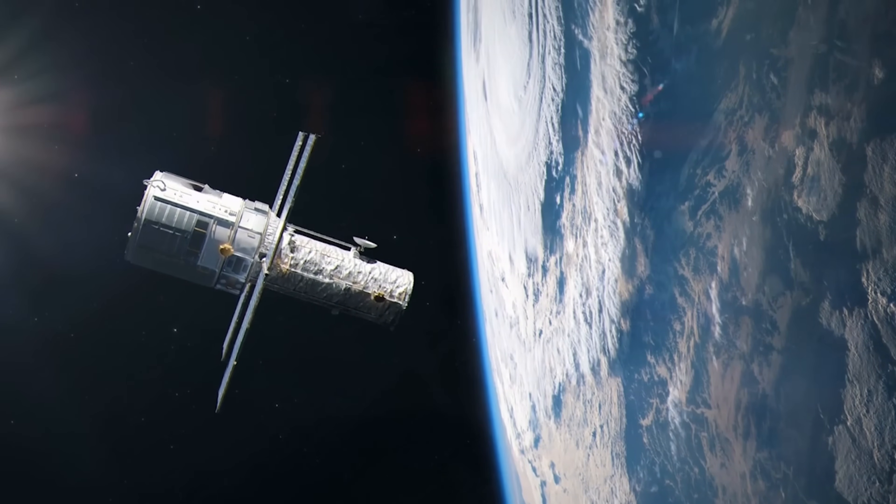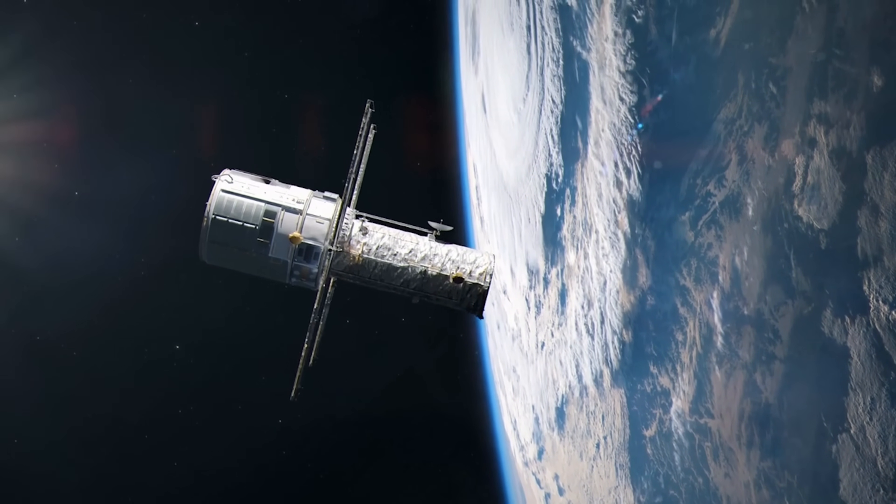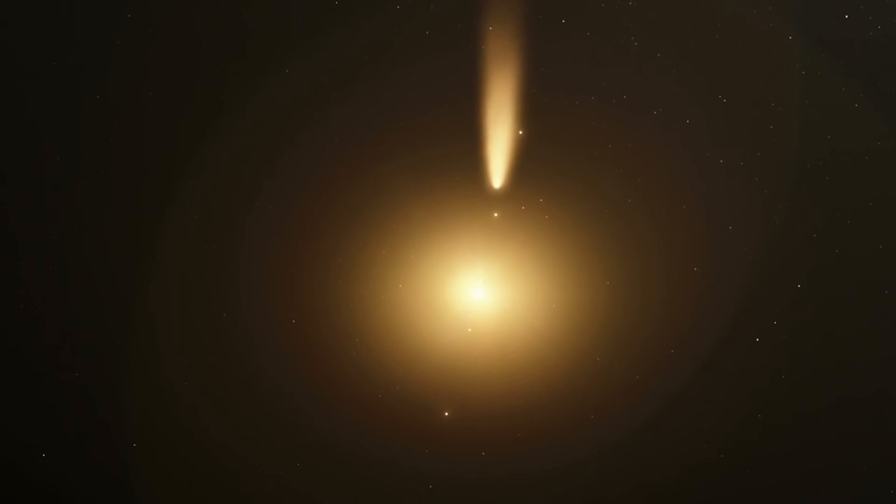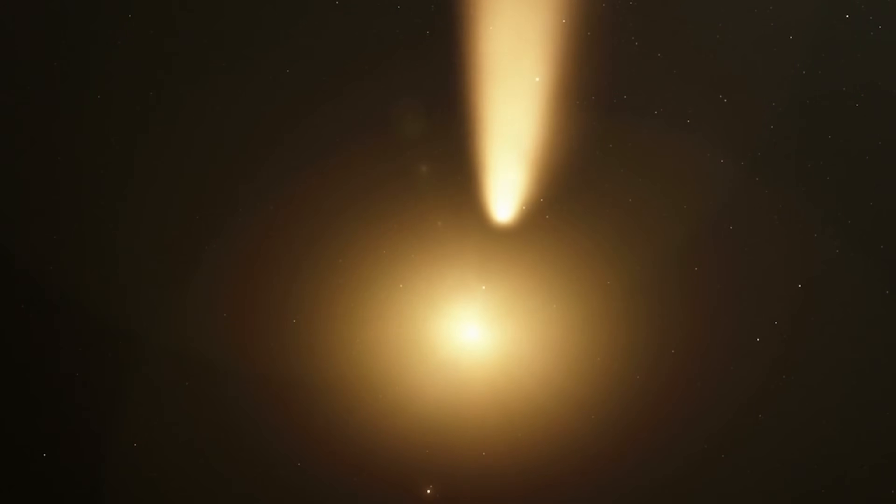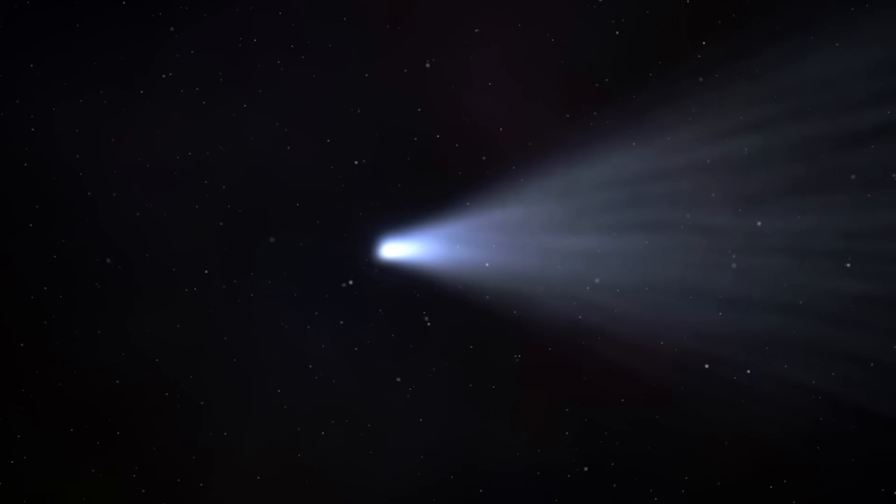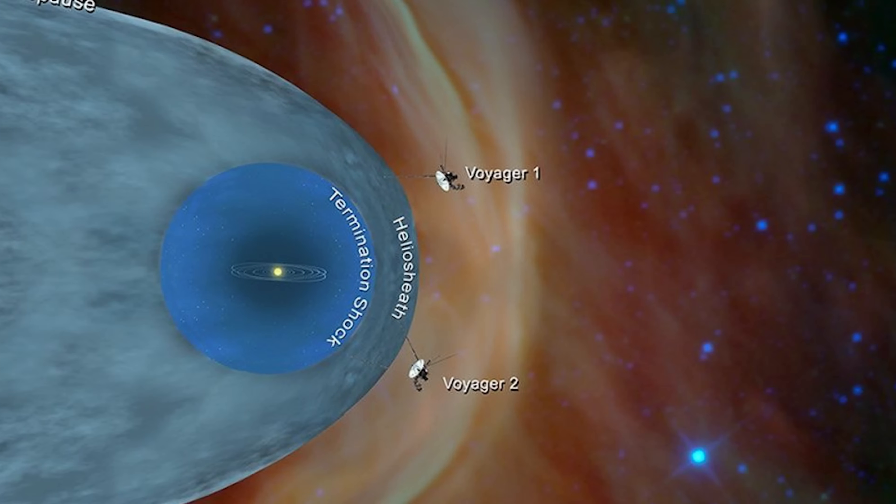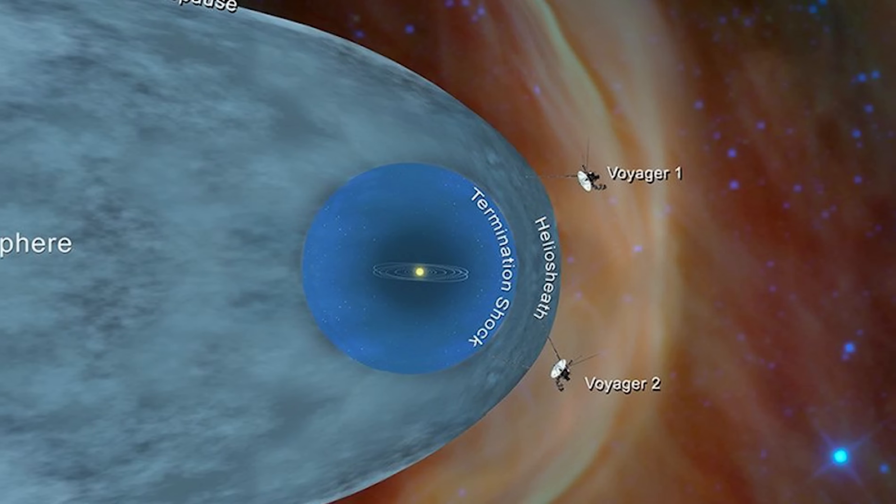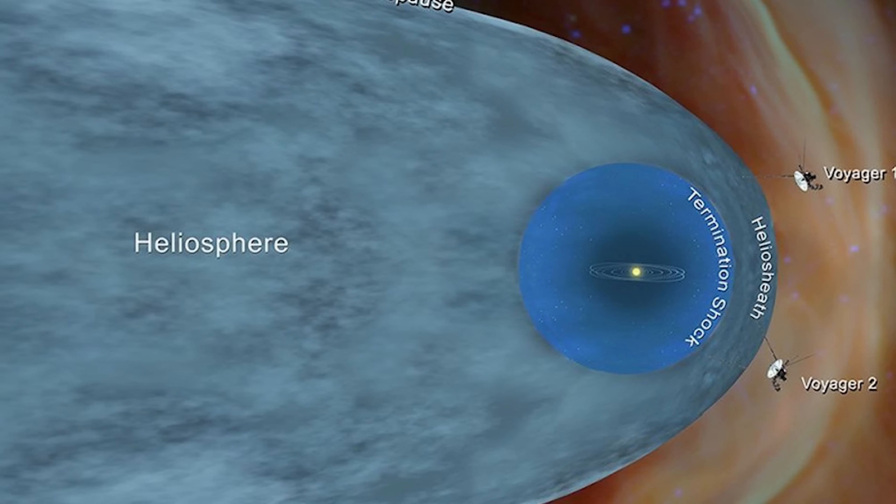From that moment, telescopes on Earth and in orbit turned to follow it. Its path was unmistakable, hyperbolic, meaning it wasn't bound to the Sun. It was moving too fast to be captured by solar gravity, traveling on a one-way journey through our system before disappearing forever into interstellar space.